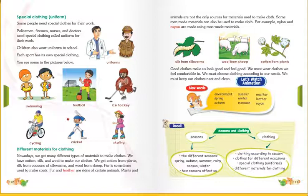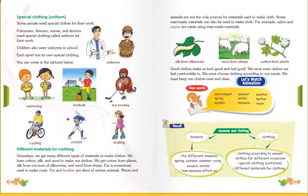Plants and animals are not the only sources of materials used to make clothes. Some man-made materials can also be used to make cloth. Man-made means materials that humans make with their hands. For example, nylon and rayon are man-made materials.